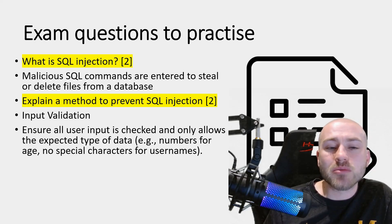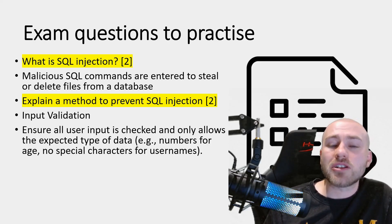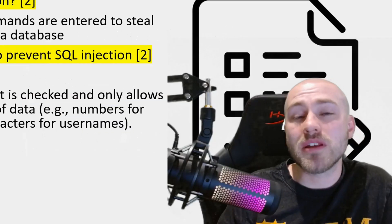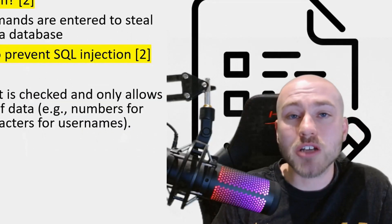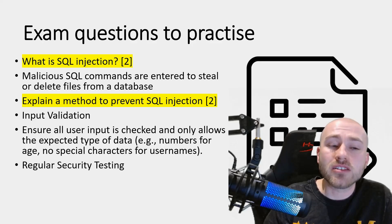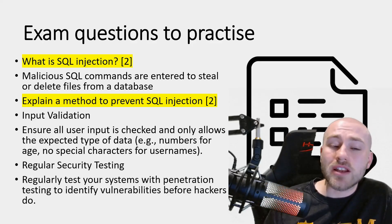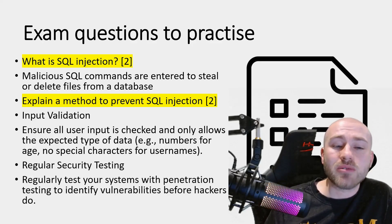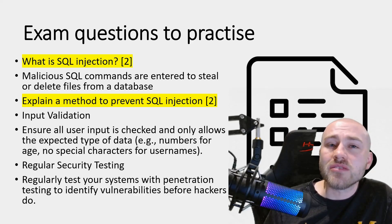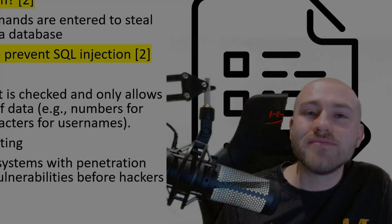A good answer gives an example, such as: numbers only for age, no special characters for usernames. That would be enough for a two-mark answer, but you could also go for regular security testing — using penetration testing to identify any vulnerabilities before hackers do. And that's it for this one — see you next time.